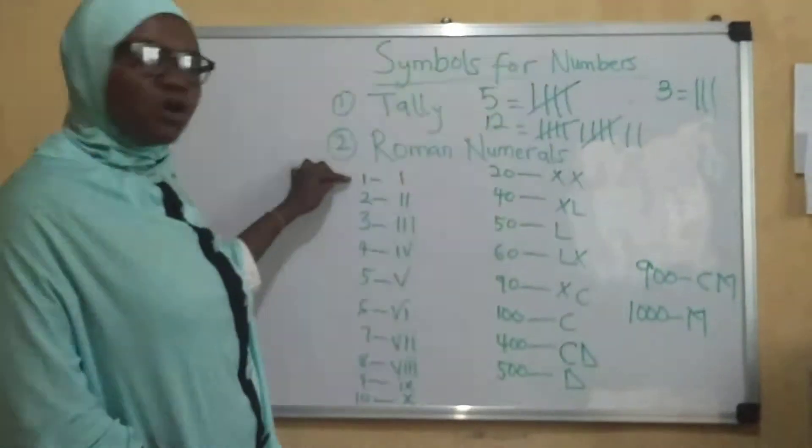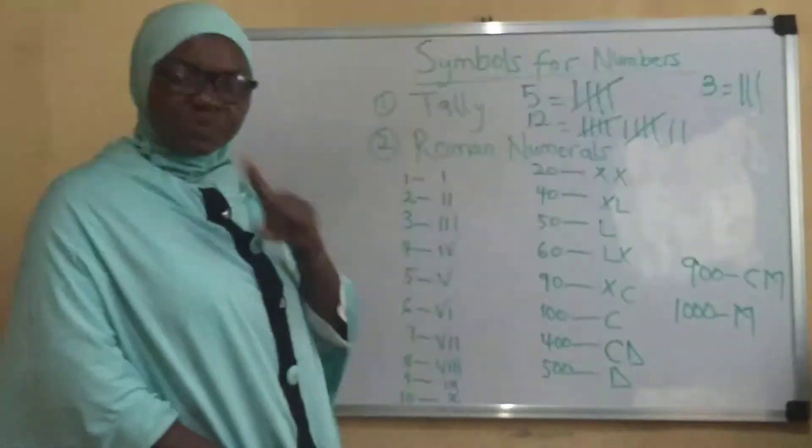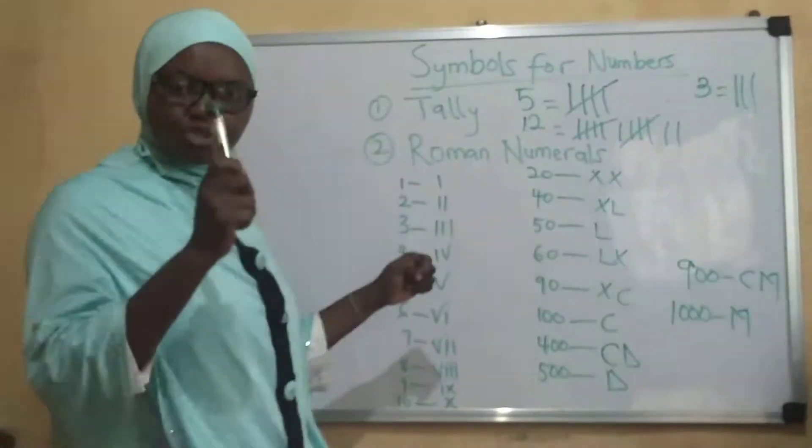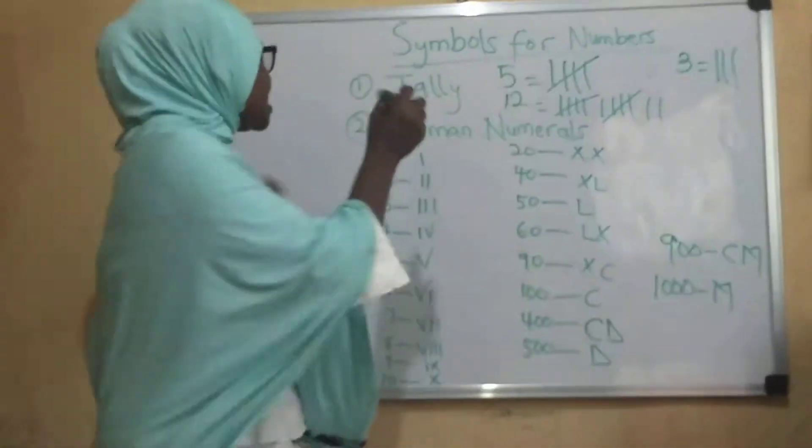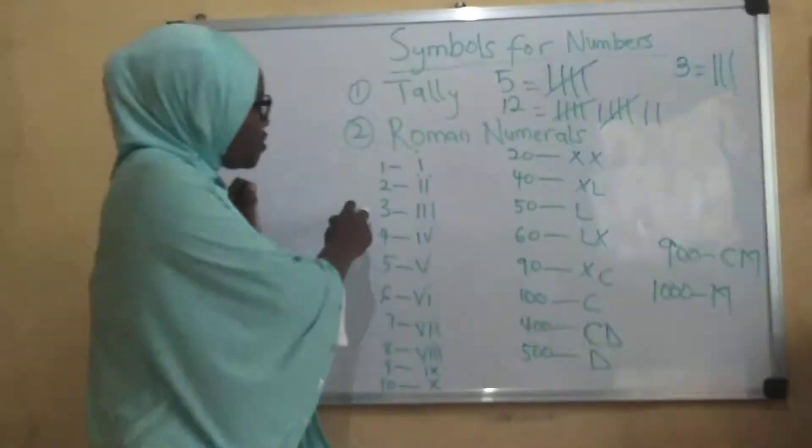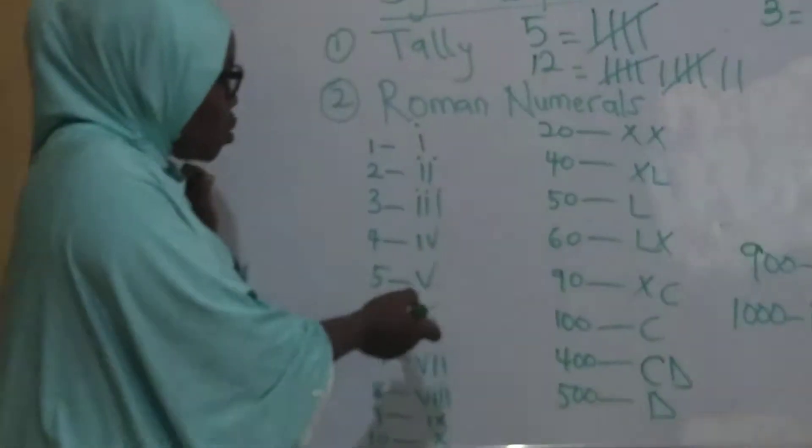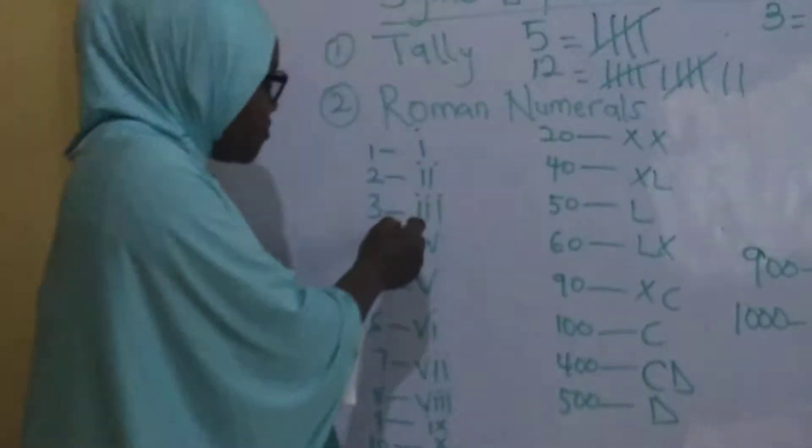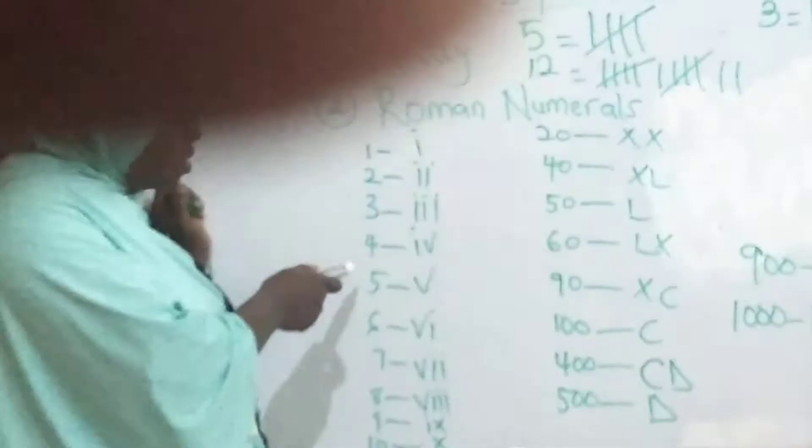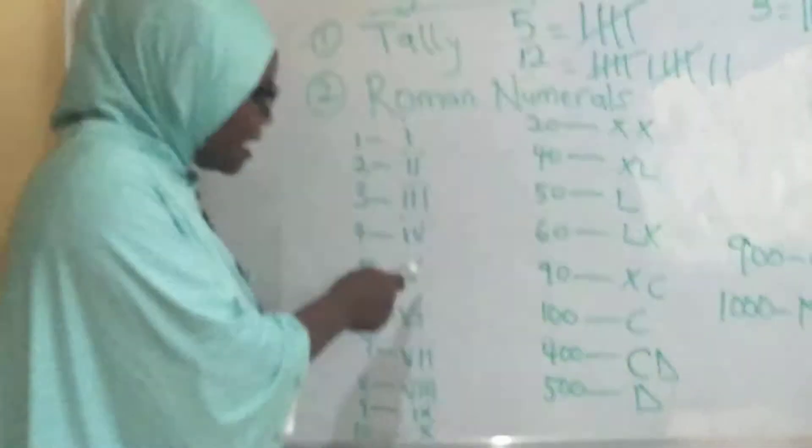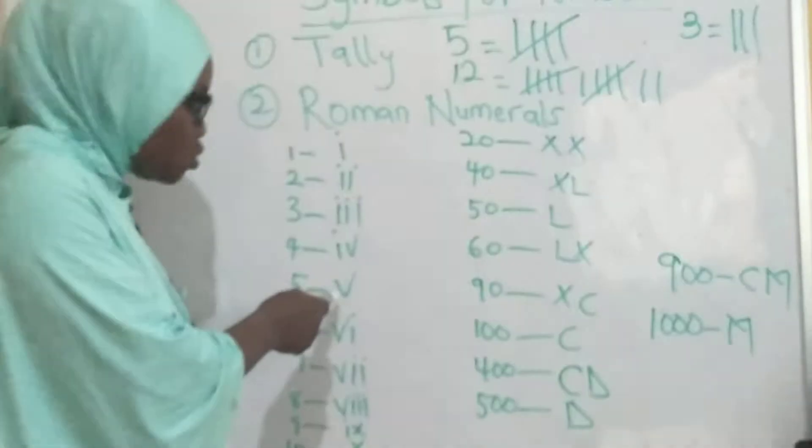Figure one is basically just represented by one stroke, I. Figure two, represented by two strokes, II. Figure three, represented by three strokes, III. Figure four, represented by one stroke and a V, IV. Figure five is represented by V.